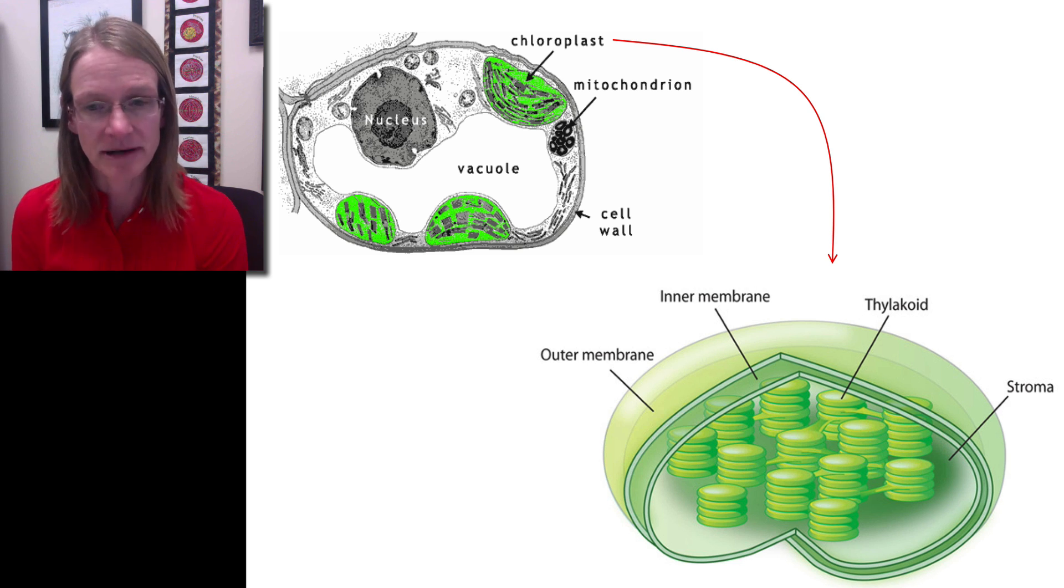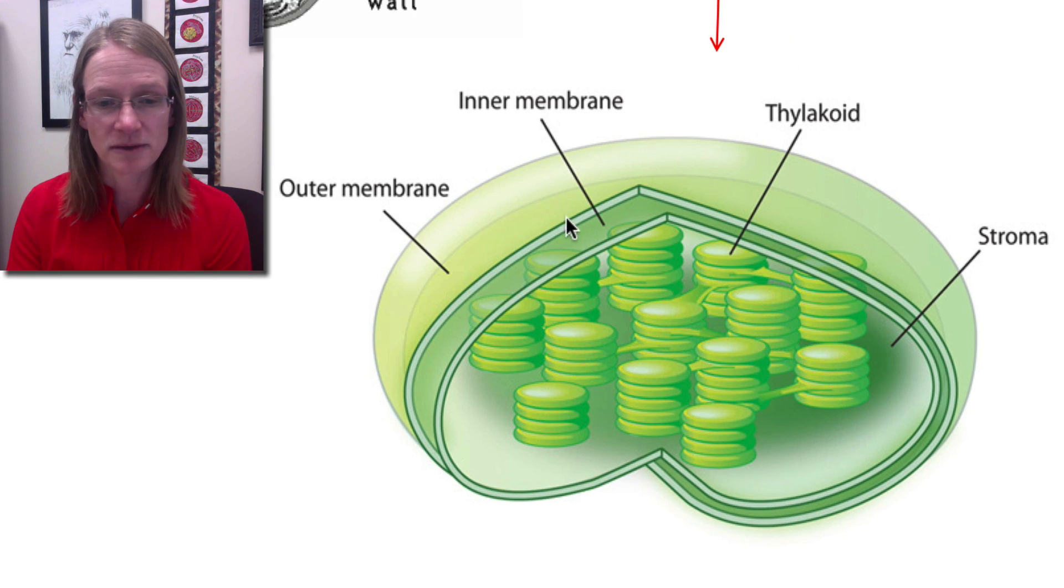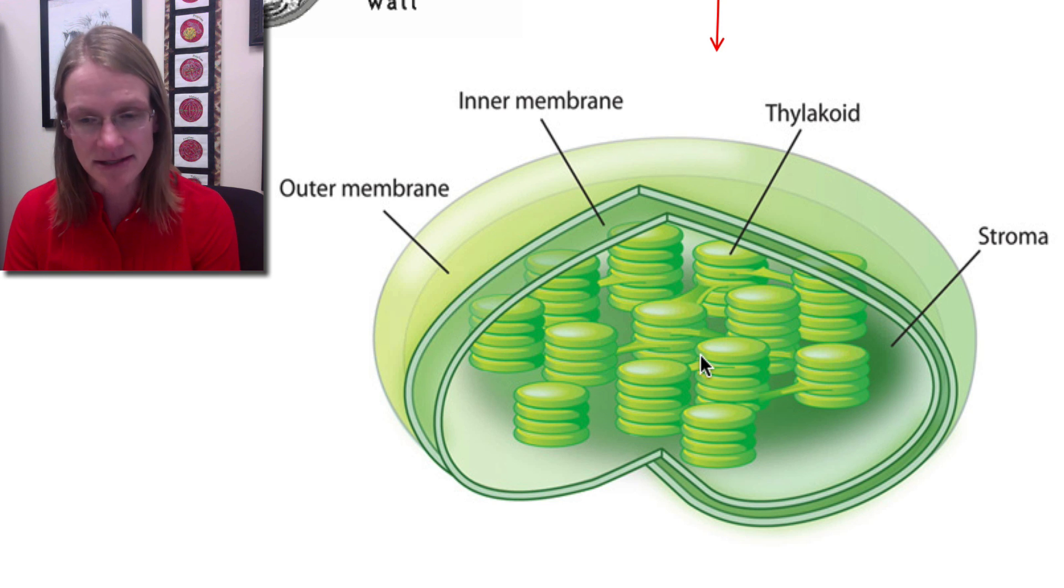As we think specifically what a chloroplast looks like, we can see this image. We have these first two membranes on the outside, and then directly on the inside is this space called the stroma. Floating within the stroma are these little structures called thylakoids—this membrane-bound compartment enclosed in yet another membrane. Photosynthesis is really occurring within these spaces, within the thylakoids and within the stroma, as well as on all of these different membranes.